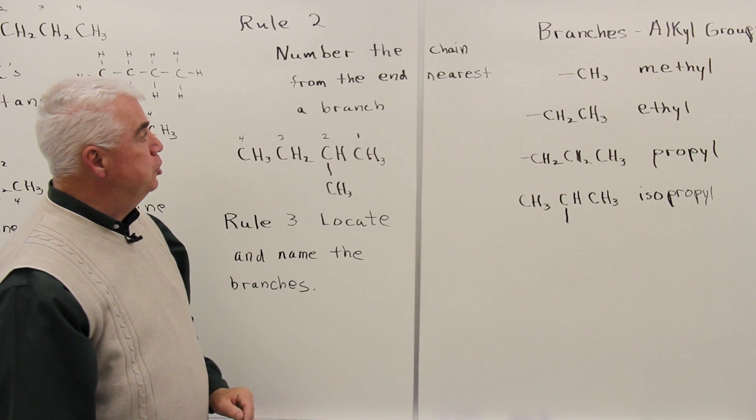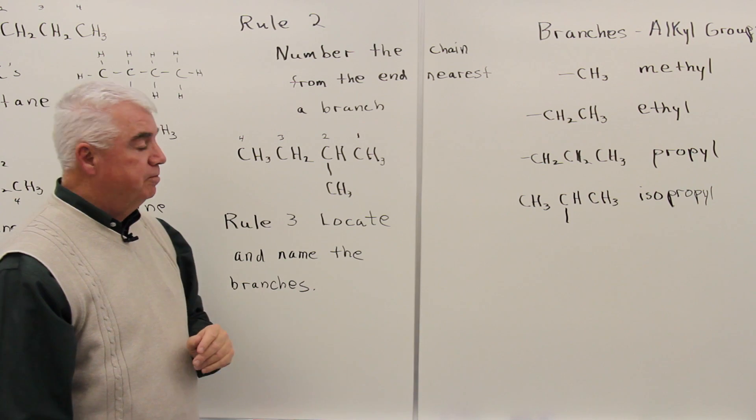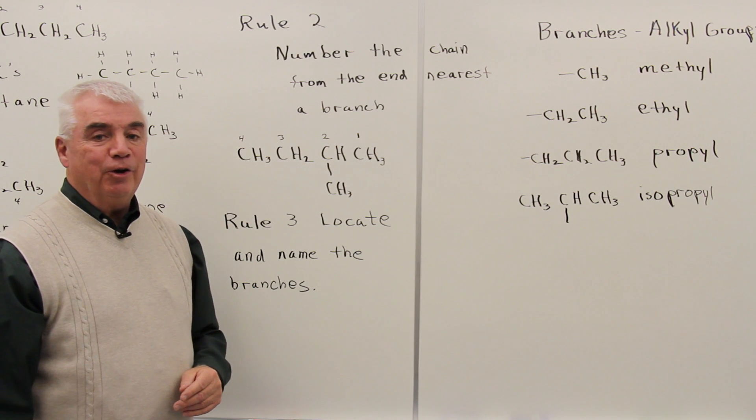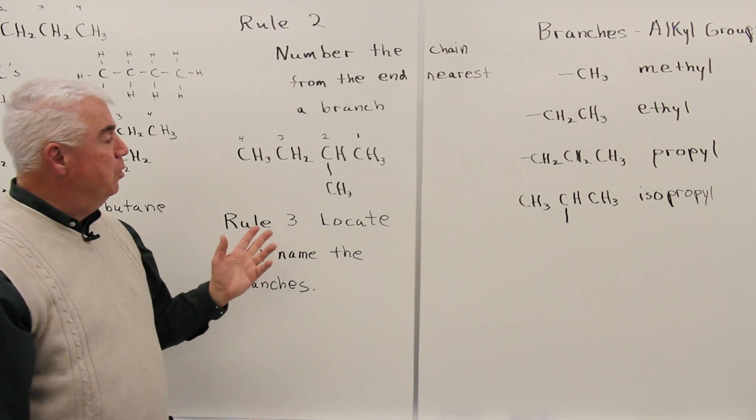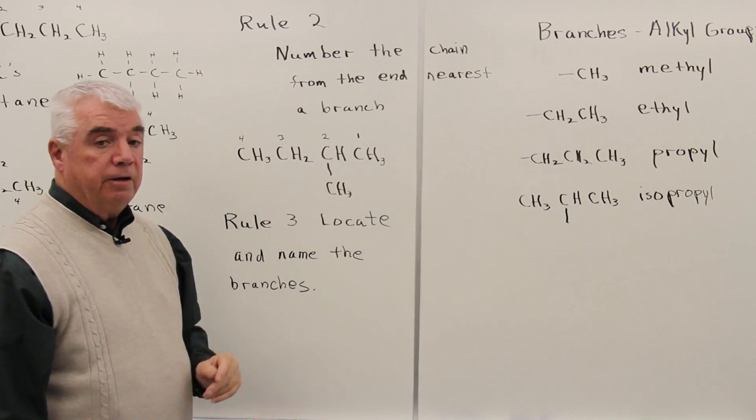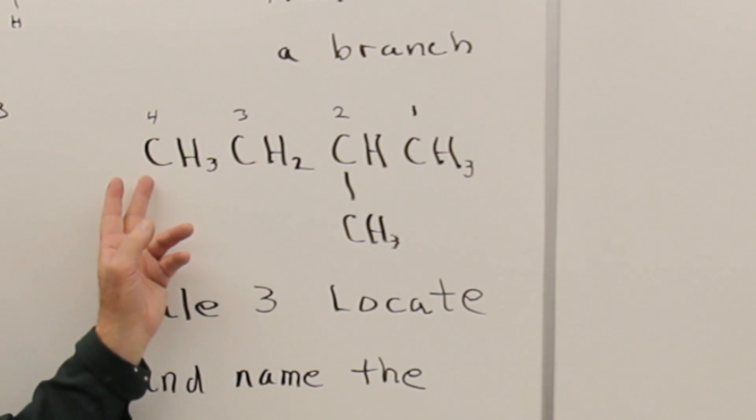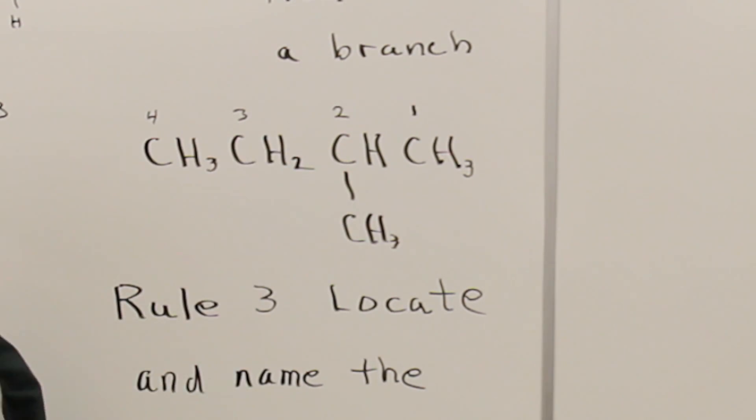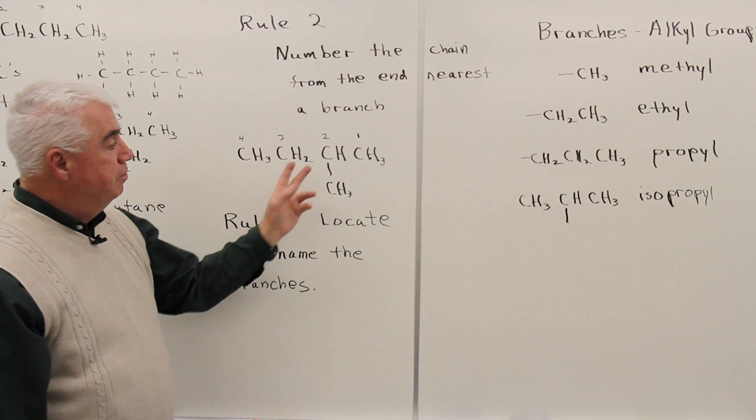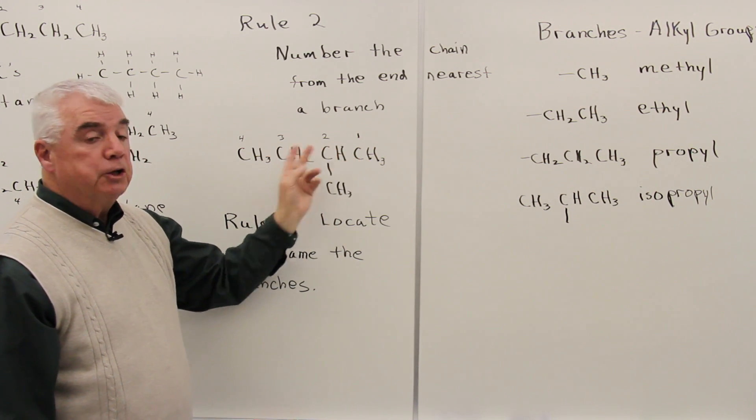Rule number two is to number the longest chain from the end nearest branch. So if we had a compound like this, in the horizontal direction, I see that I've got four carbons. There are always two ways that you can number a longest chain, from the left or from the right. Numbering from the right, we see that at position two, we've got a CH3 down here, or a branch. If I were to number from the left-hand side, one, two, three, that group of atoms would be at position three. So by numbering the longest chain from the end nearest to branch, we actually get a lower number.